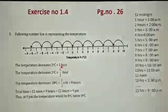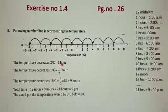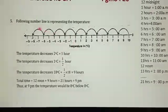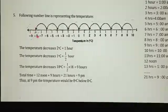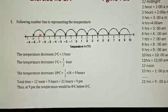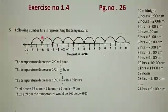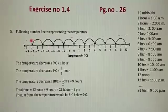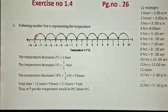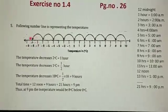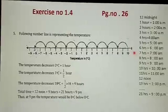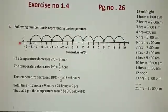You are asked: at what time would the temperature be 8 degrees Celsius below 0? Below 0 means behind 0, to the left of 0. At what time will the temperature be 8 degrees Celsius below 0, which means minus 8 degrees Celsius? Let us see practically first at what time the temperature will be minus 8 degrees Celsius.